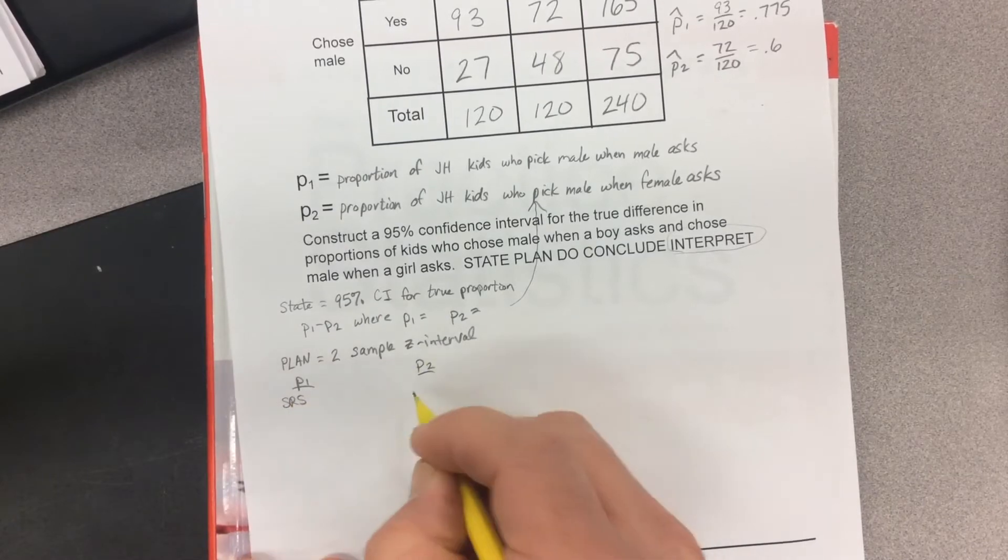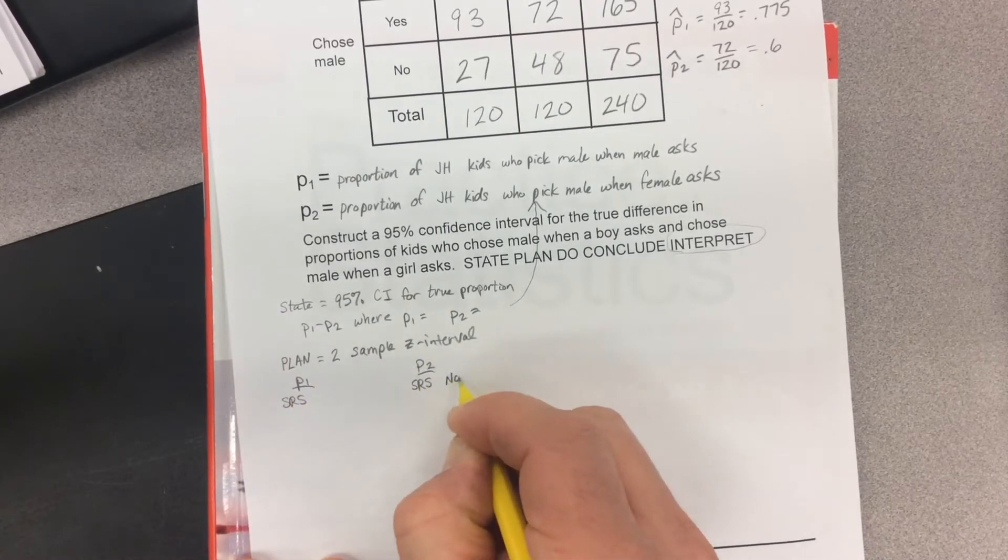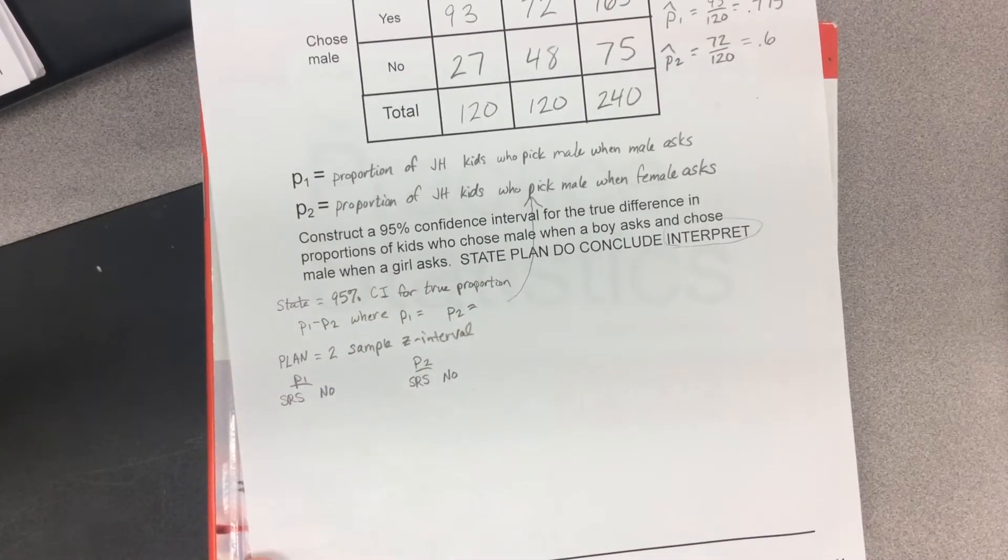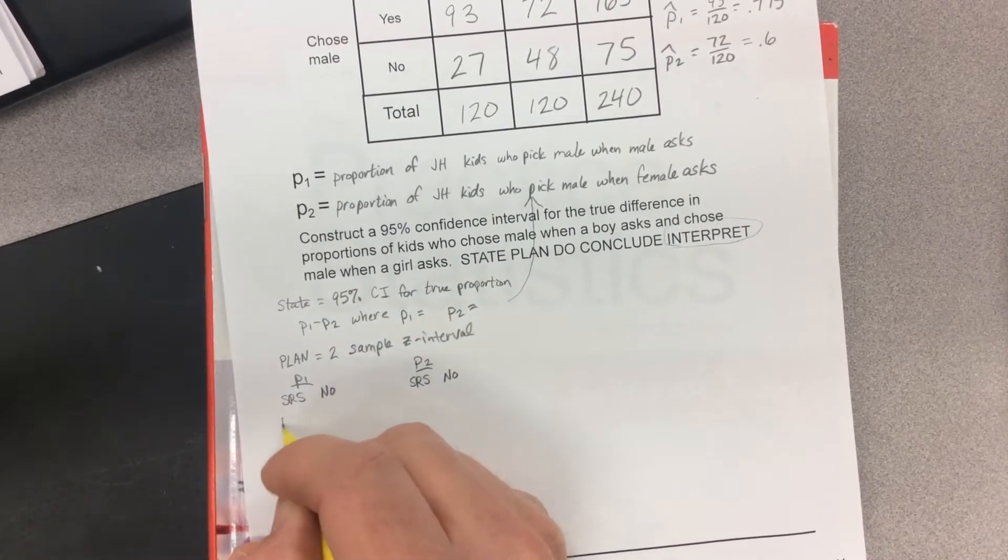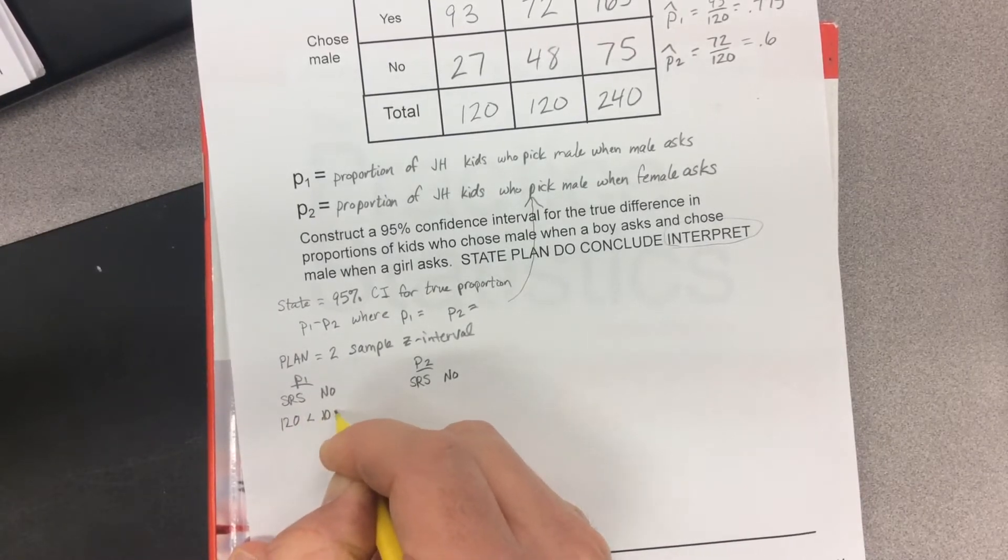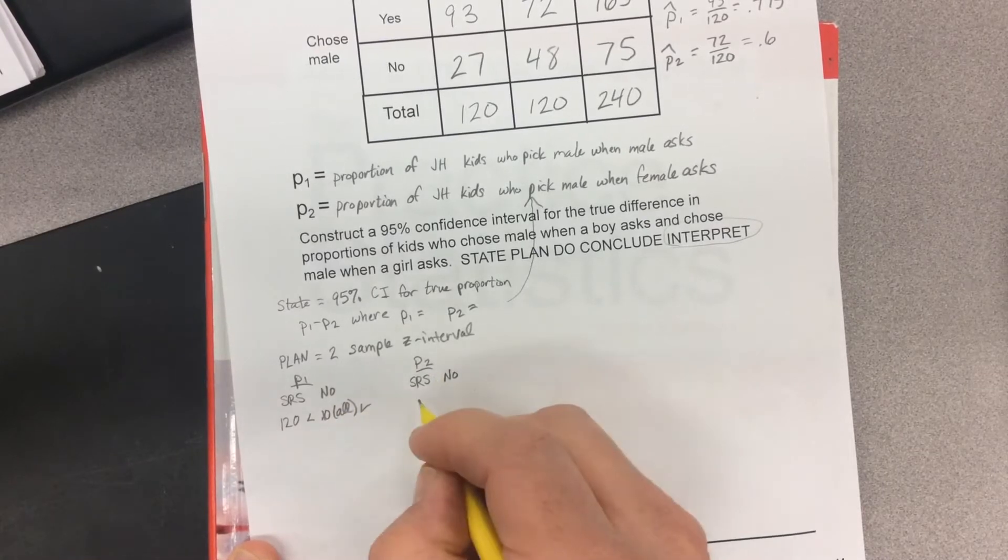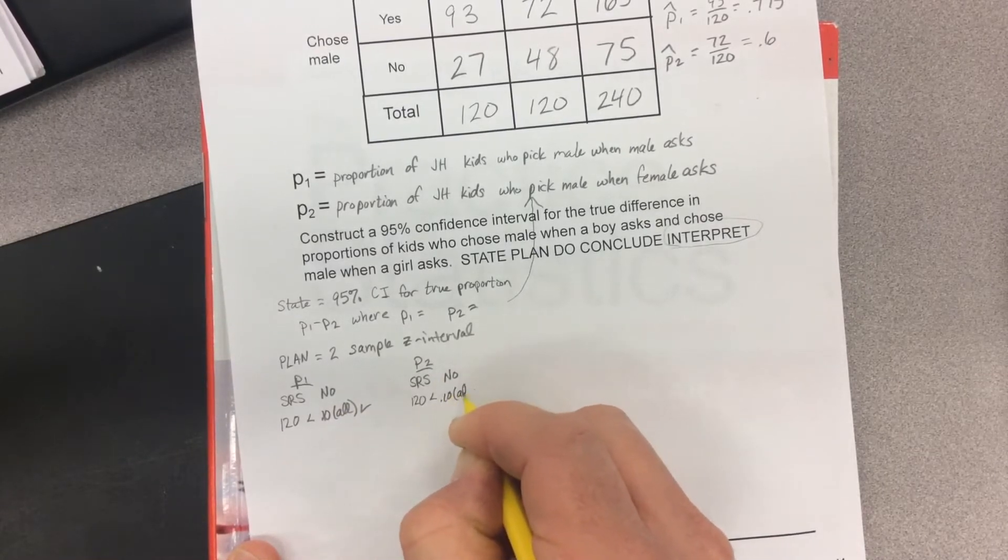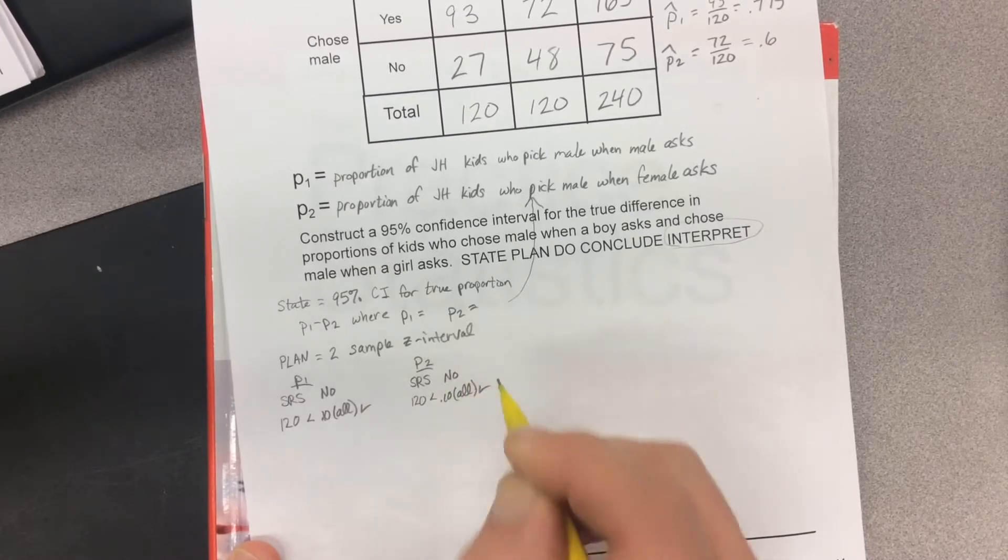First condition, SRS, definitely not. We did a big time convenience sample. 120 is less than 10% of all junior high. That one checks out. 120 is less than 10% of all junior high. That one checks out.